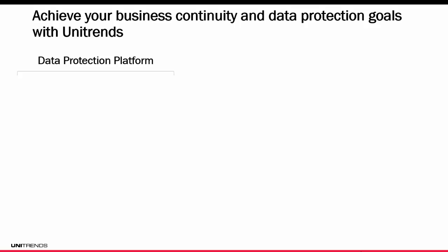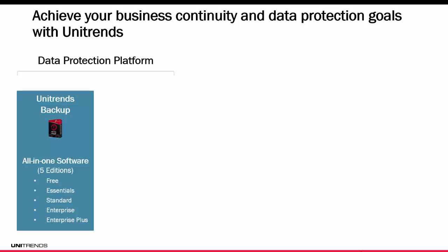Now that we've talked about what a business continuity strategy comes down to, I want to talk about how you can achieve those goals utilizing Unitrends. Our products start with the data protection platform — this is the base part of our platform that's going to back up your environment. First, we have our Unitrends backup software, an all-in-one software solution that's going to be able to protect your environment. I'll be calling it UB occasionally, and sometimes by its different deployments such as UB on Linux or UB on VMware.